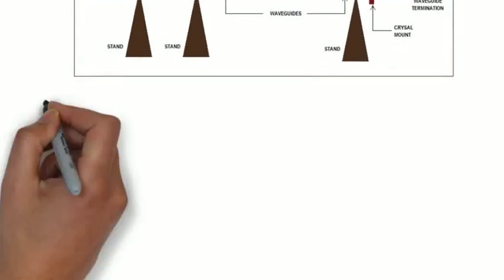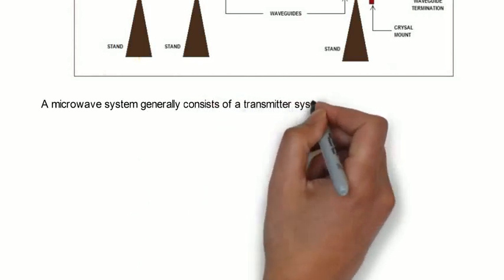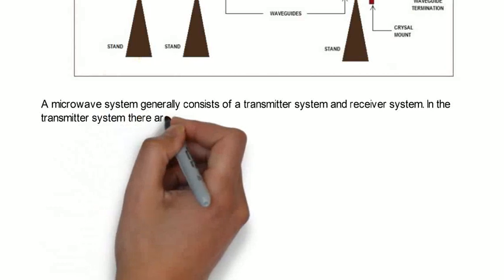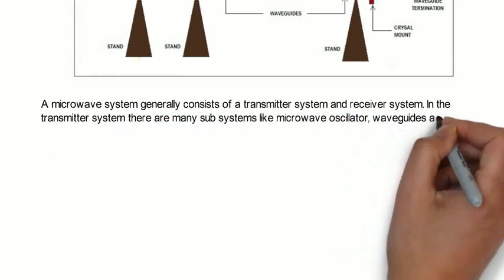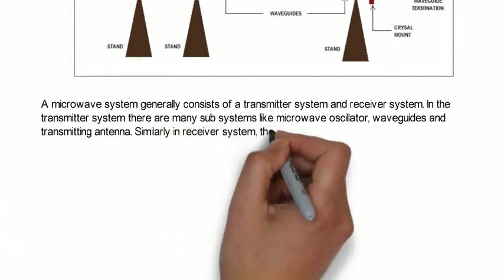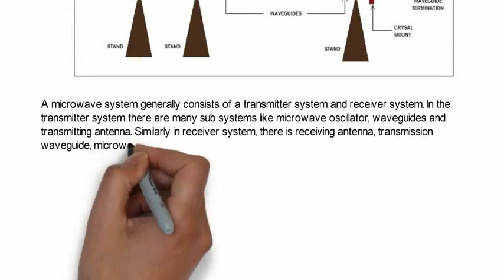A Microwave system generally consists of a transmitter system and receiver system. In the transmitter system, there are many subsystems like microwave oscillator, waveguides and transmitting antenna. Similarly in a receiving system, there is receiving antenna, transmission waveguide, microwave amplifier and receiver.